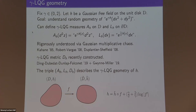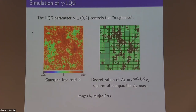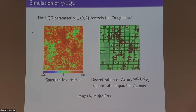That's LQG, and here is a simulation. In this figure on the right, each square has roughly the same LQG area. Where your GFF is very large, you get a very dense geometry corresponding to large LQG area; where the GFF is very negative, you have a very small LQG area.